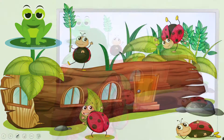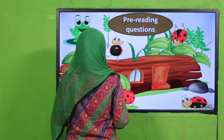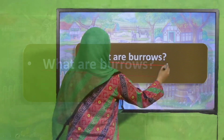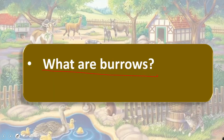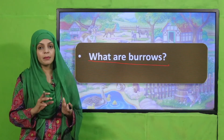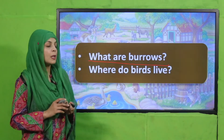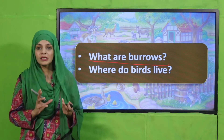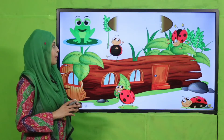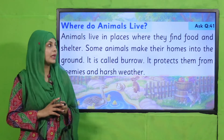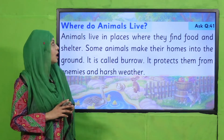Now let's move to the pre-reading questions. Tell me: what are burrows? Baro kya hoti hai? They are holes dug into the ground — that is a burrow. And where do birds live? They live in nests — ghosle mein rehte hain. Now let's move forward towards reading.